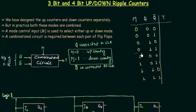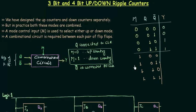For the first 4 cases M is 0, meaning up counting, and we already know up counting only occurs when Q is connected to the clock. So I will write Q as my output: 0, 0, 1, 1, because Y acts as the clock for the next flip-flop. When M equals 1 it does down counting and Q complement equals my Y. For the last 4 cases M equals 1, so I take Q complement: 0, 1, 0, 1.